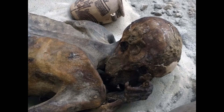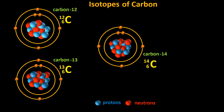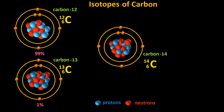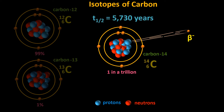It comes down to carbon-14. As we've seen in previous episodes, about 99% of carbon atoms on Earth are carbon-12 atoms, 1% are carbon-13 atoms, but 1 in a trillion or so are carbon-14 atoms. Carbon-14 is a beta-minus emitter, which has a half-life of about 5,730 years.